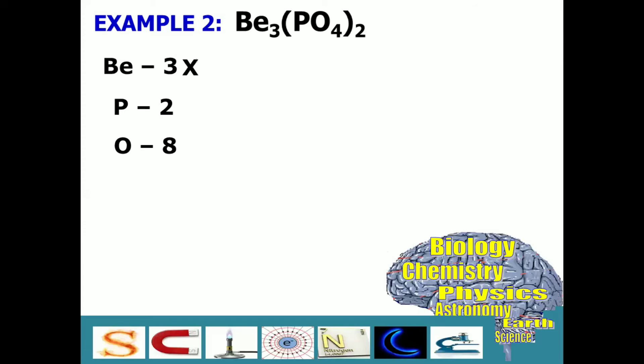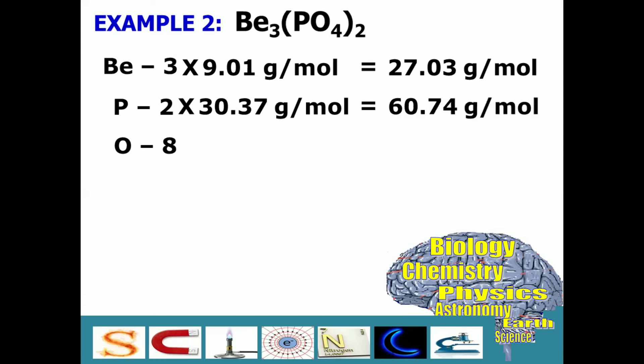For beryllium, we have 9.01. Multiplying it by 3, the result is 27.03. For phosphorus, its atomic mass is 30.37. And multiplying it by 2, it's equal to 60.74.